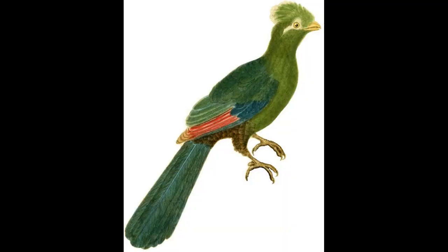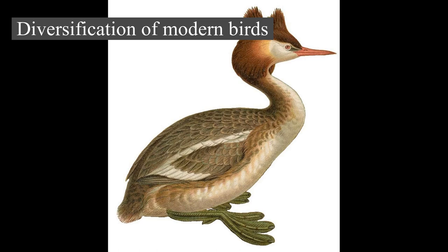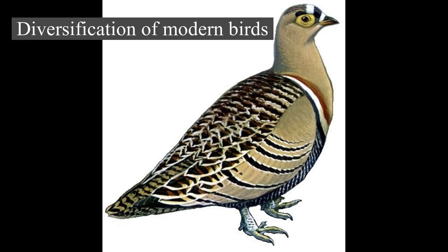Diversification of modern birds. All modern birds lie within the crown group Aves — alternatively Neornithes — which has two subdivisions: the Palaeognathae, which includes the flightless ratites such as the ostriches and the weak-flying tinamous, and the extremely diverse Neognathae, containing all other birds. These two subdivisions have variously been given the rank of superorder, cohort, or infraclass. Depending on the taxonomic viewpoint, the number of known living bird species varies anywhere from 9,800 to 10,758.